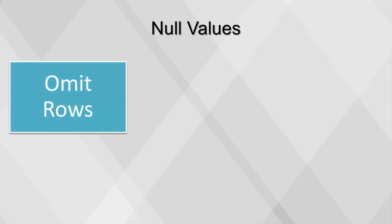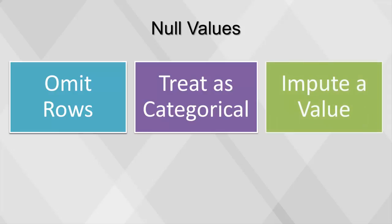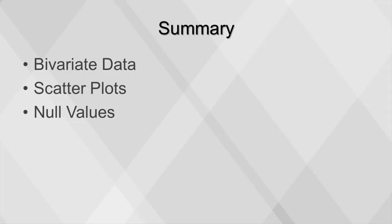A common problem when working with real-world data is the presence of missing or null values within a dataset. There are three strategies to deal with the issue. The first one is to omit the rows. If the variable is very important to the analysis and there are not many observations with missing values, it can be acceptable to filter or delete those rows. The second is to treat missing as a separate category. If the variable is categorical, this is easy. If the variable is numeric, then the variable will need to be binned and a category created for the missing rows. The third is to impute a value using distribution measures, such as the mean or the median, or other variables. If values of other fields have differing distributions for the variable with missing values, we can calculate separate distribution measures using these categories. This concludes our video on bivariate data, scatter plots, and null values.